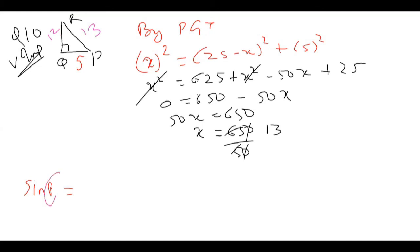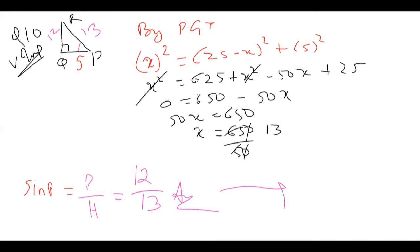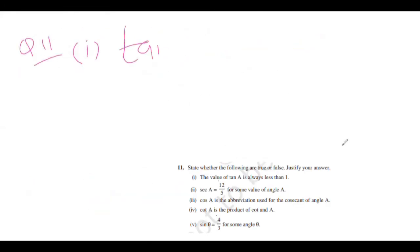We got the classic 5-12-13 right triangle. Now, sin P = P/H = QR/PR — perpendicular opposite to angle P is 12, and hypotenuse is 13, so sin P = 12/13. Now the remaining parts ask us to evaluate statements.